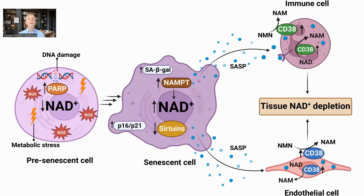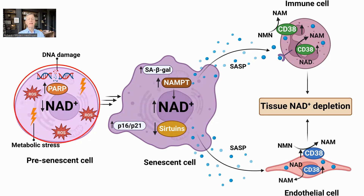The relationship between NAD levels and senescent cells is complex. Lower NAD levels allow more DNA damage, as DNA repair enzymes require NAD, and also cause mitochondrial dysfunction and an increase in reactive oxygen species and greater cellular damage. These factors can lead to the cell entering senescence.